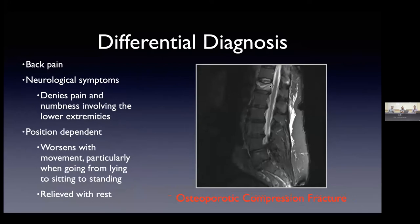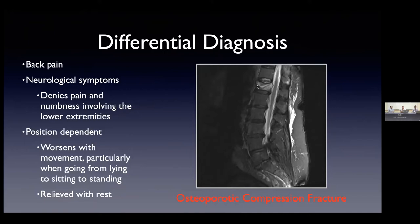An osteoporotic compression fracture is a great diagnosis we see often. A normal vertebra is usually rectangular in shape, but in this condition it is not — the analogy I give patients is that it's as though you take a marshmallow and squish it. You can see edema in the vertebra; this is something fresh. These patients have a lot of trouble sleeping at night. Rolling over in bed can be excruciating, and going from lying down to sitting up can be quite painful.